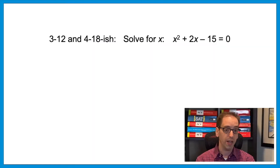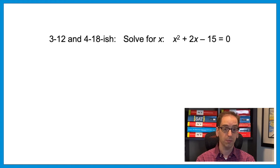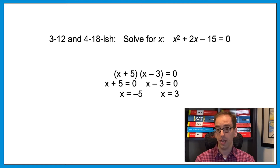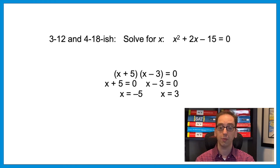The SAT also loves trinomial factoring — this came up in several variations on the April test. Let's do a quick warm-up with an easier one. This is a cousin of section 3 question 12 and section 4 question 18. When you get a trinomial, find two numbers that multiply to the C term (negative 15) and add or subtract to the B term (2) — that's 5 and negative 3. It factors as (x + 5)(x − 3), giving solutions x = −5 and x = 3.